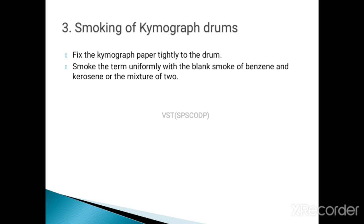Smoking of chemograph drums: fix the chemograph paper tightly to the drum. Coat the Sherrington recording drum chemograph paper uniformly with the black smoke of benzene and kerosene or a mixture of the two.